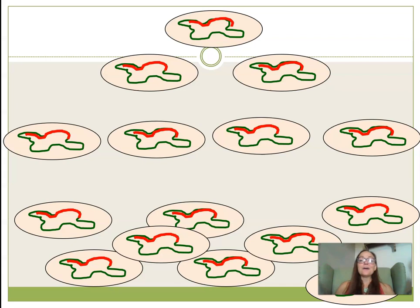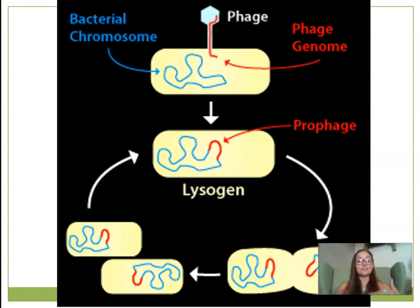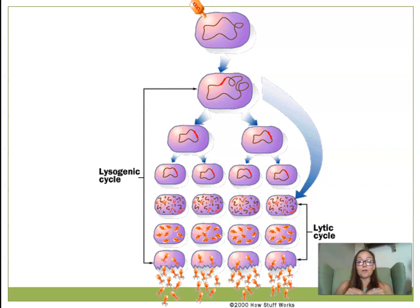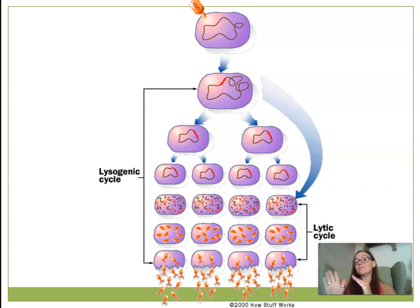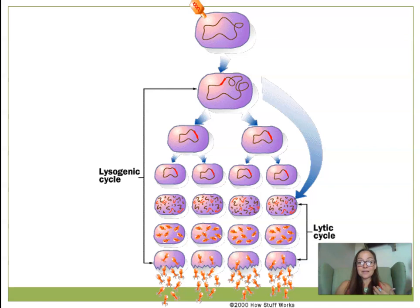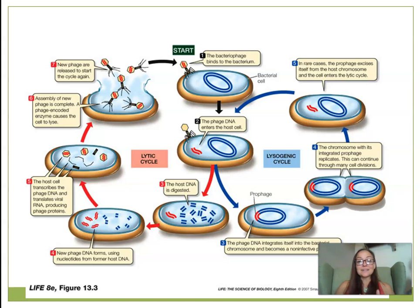As that bacterial population undergoes exponential growth, you have enormous amounts of that viral DNA in thousands or millions of bacteria. There are environmental signals — some kind of trigger — that will cause the gene expression of that viral DNA to get turned on. In that moment, it switches from the lysogenic cycle to the lytic cycle. Now the bacteriophage begins reproducing within the bacterium, filling up and bursting, spreading to nearby bacteria.